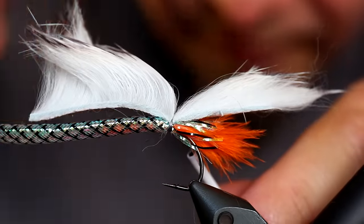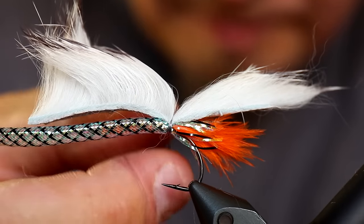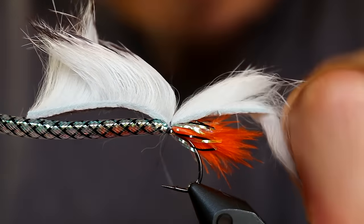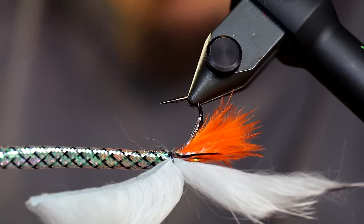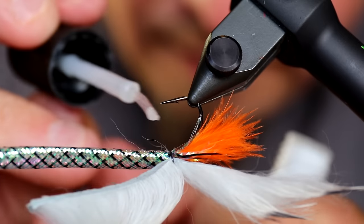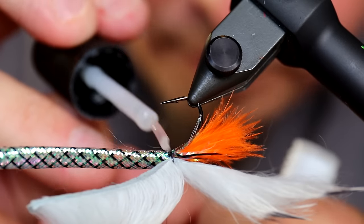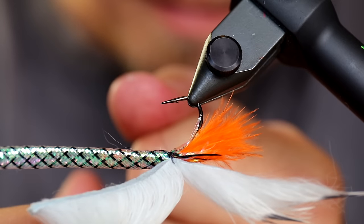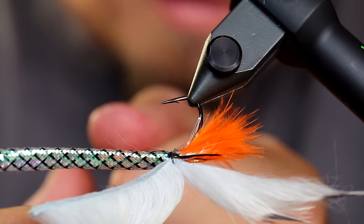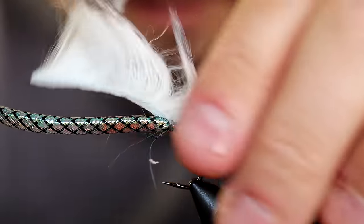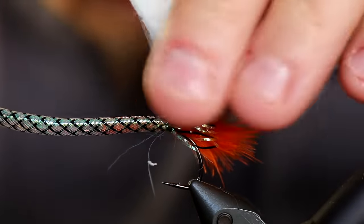And if you want, you can add some varnish or some super glue here. Even apply some to the tying thread. Just gonna turn it over and apply a bit of super glue. Just a small amount will suffice. Like so. Cut off the thread. Like that. And I'm gonna hold everything back here.